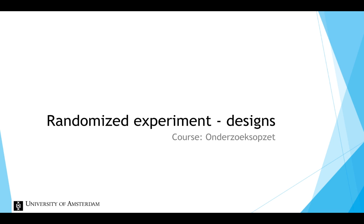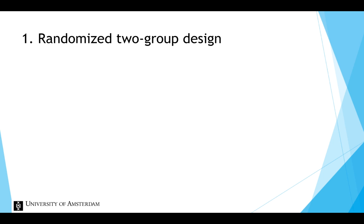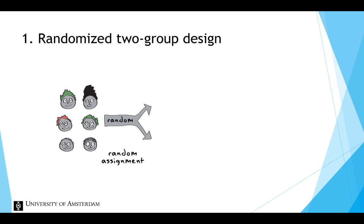The simplest design is the randomized two-group design. In this design, participants are randomly assigned to one of the two conditions, usually a treatment or experimental group where the cause is present, and a control group where the cause is absent. The independent variable could also differ between the conditions in amount or kind.